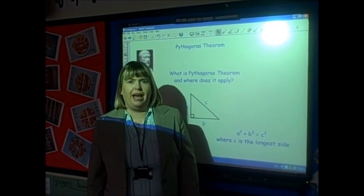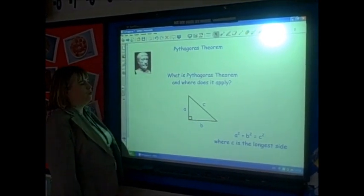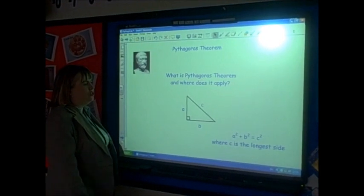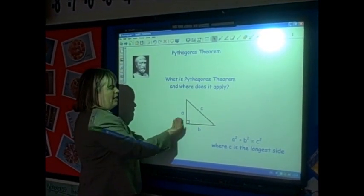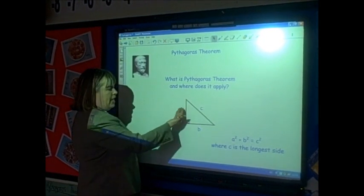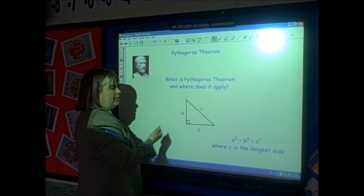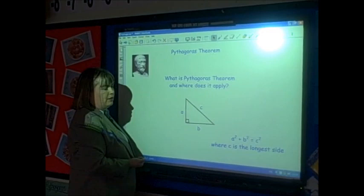What is Pythagoras' theorem and where does it apply? Pythagoras was an ancient Greek mathematician who noticed a relationship within right-angle triangles. He noticed that for any triangle labelled A, B and C, A squared plus B squared is equal to C squared, where C is the longest side.